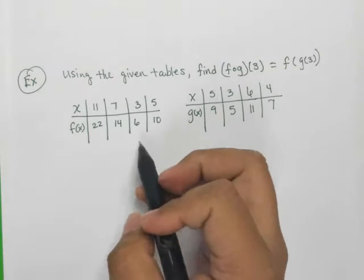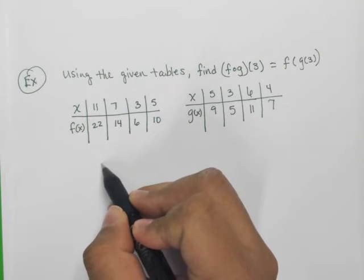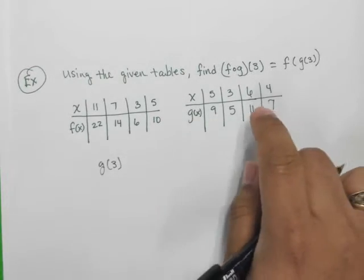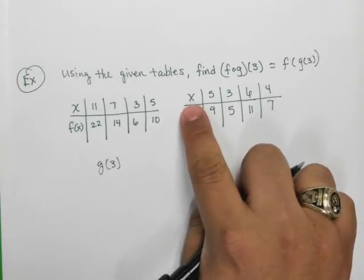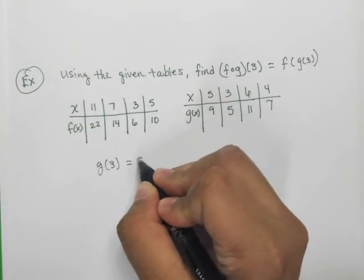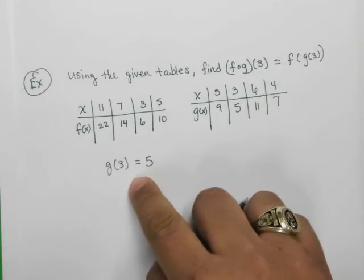So the first thing, then, we need to find is G of 3. So what is G of 3 from the table? G of 3. So here's X is 3. What's G of 3? In this case, it is 5. So G of 3 is 5.